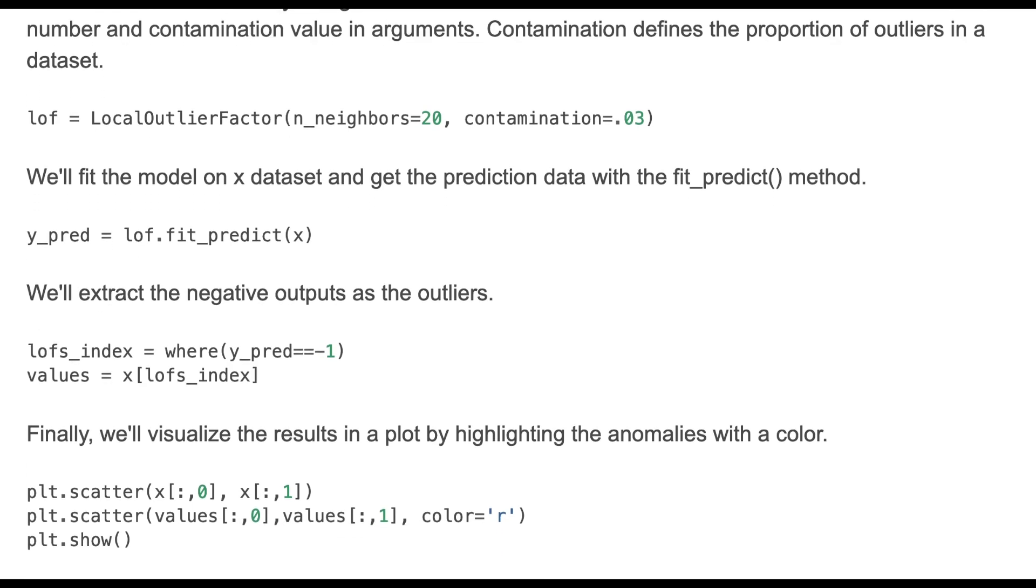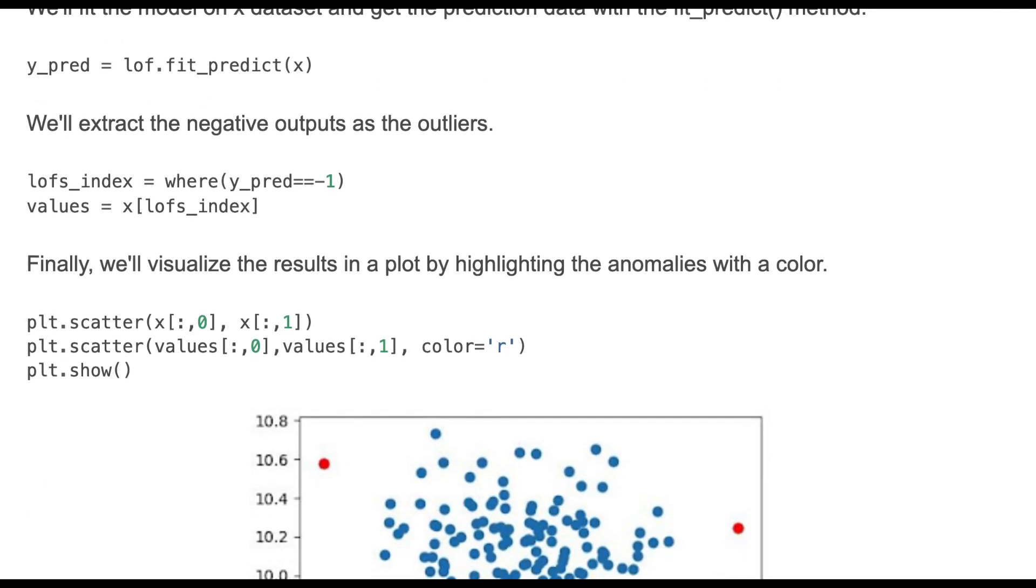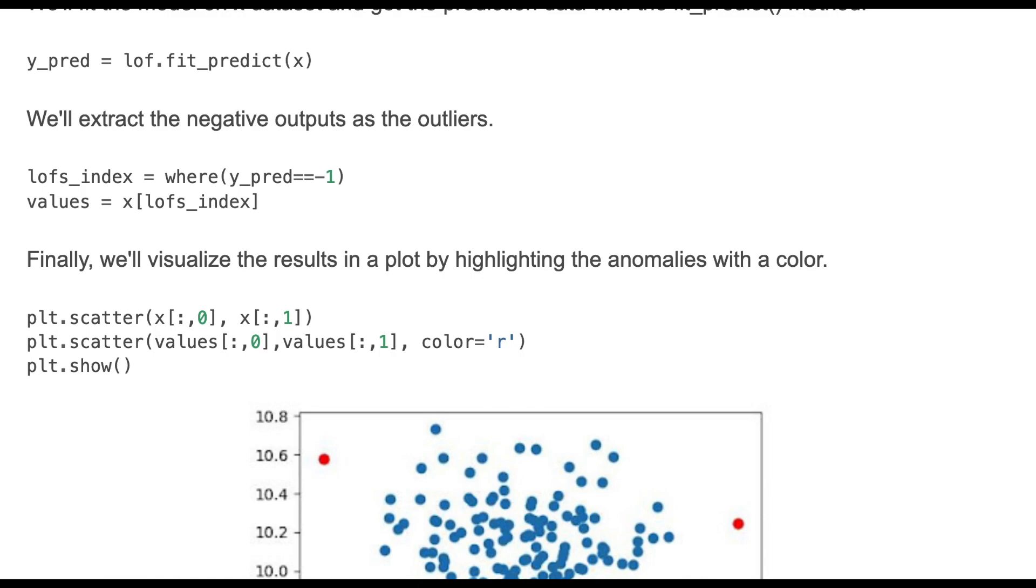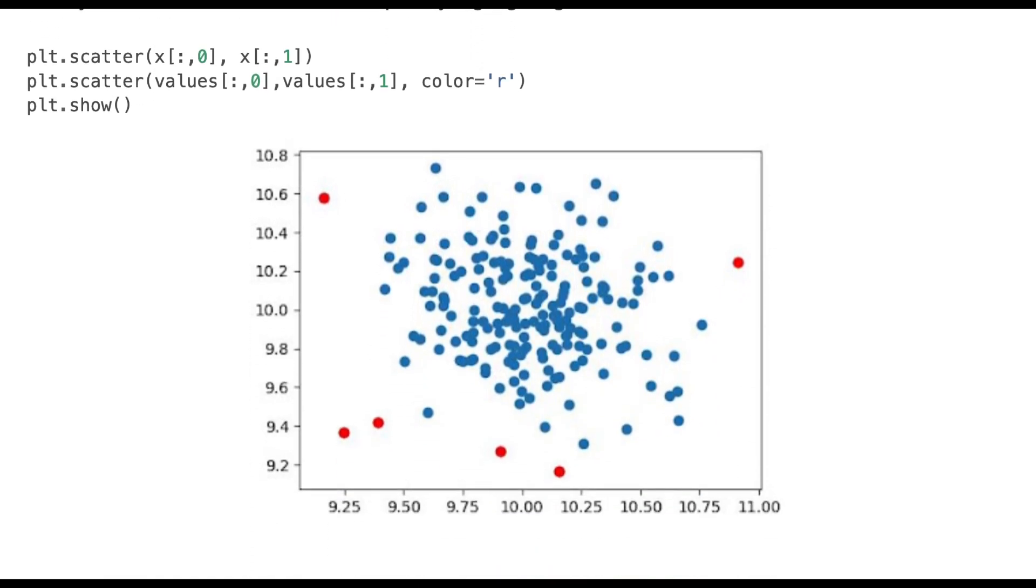Then we'll fit the model on X dataset and get the prediction data with the fit_predict method. We'll extract the negative outputs as the outliers. First we'll find out their indexes and then we'll get their values. Finally we'll visualize the results in a plot by highlighting the anomalies with a color. This graph shows that there are a few anomalies in this dataset and they are highlighted in red color.